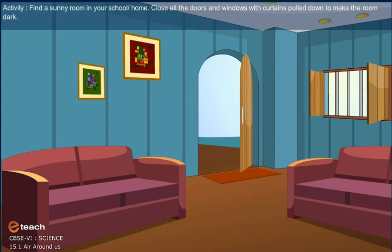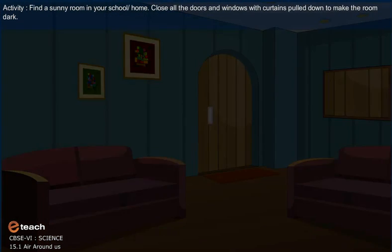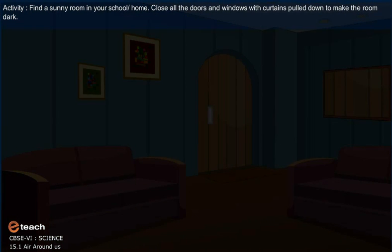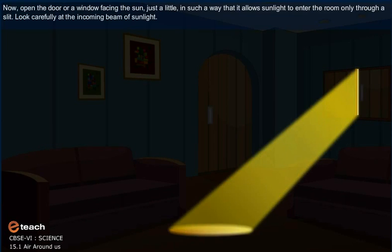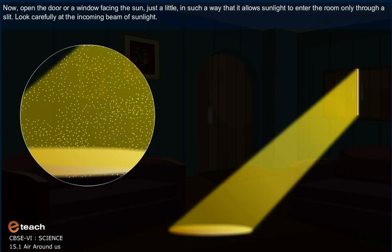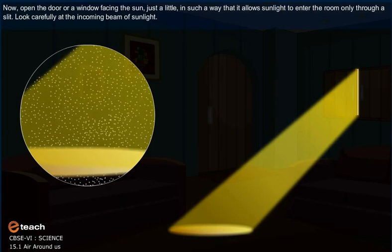Activity. Find a sunny room in your school or home. Close all the doors and windows with curtains pulled down to make the room dark. Now, open the door or a window facing the sun just a little in such a way that it allows sunlight to enter the room only through a slit. Look carefully at the incoming beam of sunlight.